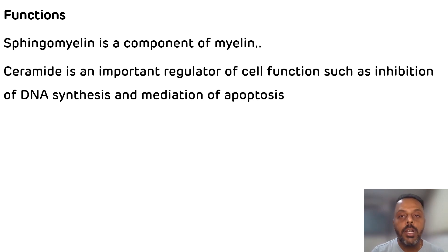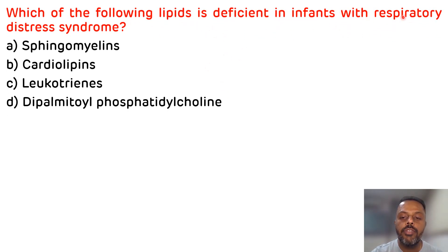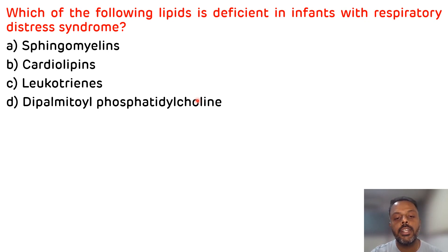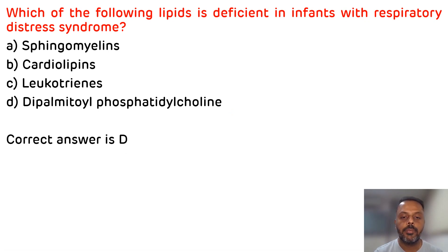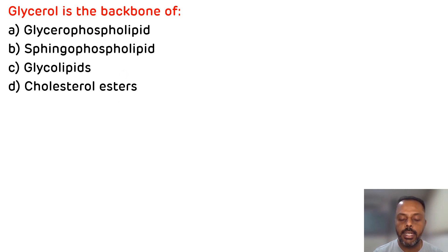Now we will see multiple choice questions. The first question is: which of the following lipids is deficient in infants with respiratory distress syndrome? The options are sphingomyelin, cardiolipin, leukotrienes, and dipalmitoyl phosphatidylcholine. In respiratory distress syndrome, there is a deficiency of dipalmitoyl phosphatidylcholine. The correct answer is D. Second question: glycerol is the backbone of which of the following? Options are glycerophospholipids, sphingophospholipids, glycolipids, and cholesterol esters. Glycerol is the backbone of glycerophospholipids, so the correct answer is A.